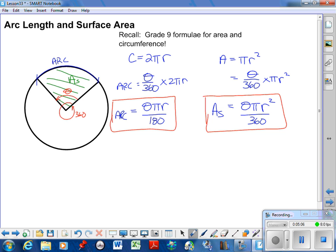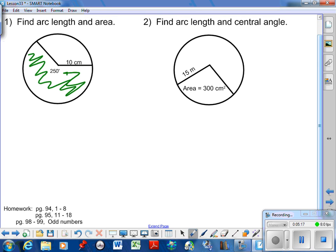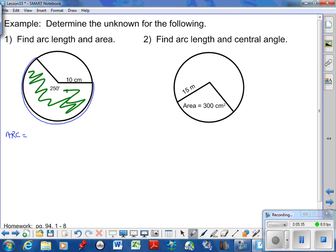I have a couple of examples practicing that. Number one, find the arc length and area. The arc length formula is θπr over 180. Plugging that in: 250π times 10 over 180, and we get a total of 43.6 centimeters.